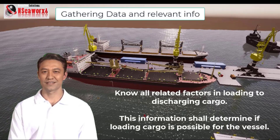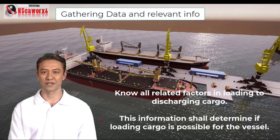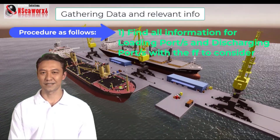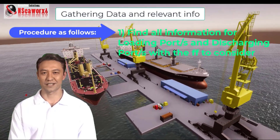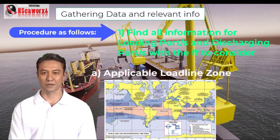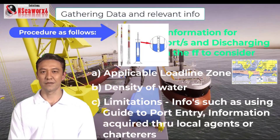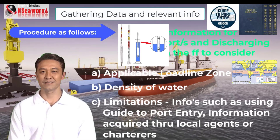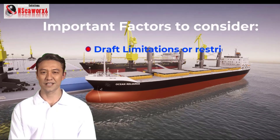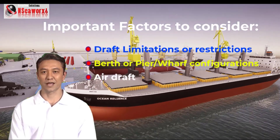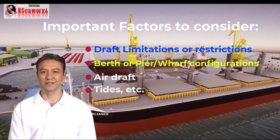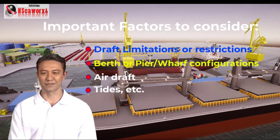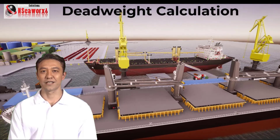Our first step is to gather data — all related factors from loading to discharging cargo. This information shall determine if loading cargo is possible for the vessel. The following information is to be collected: first, find all information for loading ports and discharging ports, considering: (A) applicable load line zone, (B) density of water, and (C) limitations imposed, such as using the guide to port entry. Second, information acquired through local agents or charterers — examples include draft limitations, berth, pier or wharf configurations, airdraft, tides, etc. All this information plays a vital role in completing the stowage plan and loading the ship at its optimum limits. So to get a clearer view, we shall use the deadweight scale.